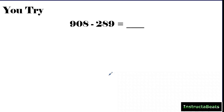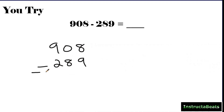This isn't a shortcut — we're just using our place value knowledge to solve this math. Here's your 'you try' problem. If you're ready, pause the video and try it out, then push play to check your answer. It's okay to fail as long as you learn from it. Let's go: 908 minus 289. Eight ones minus nine ones — can't do that, so more on the floor go next door, but there's nothing in the tens place.